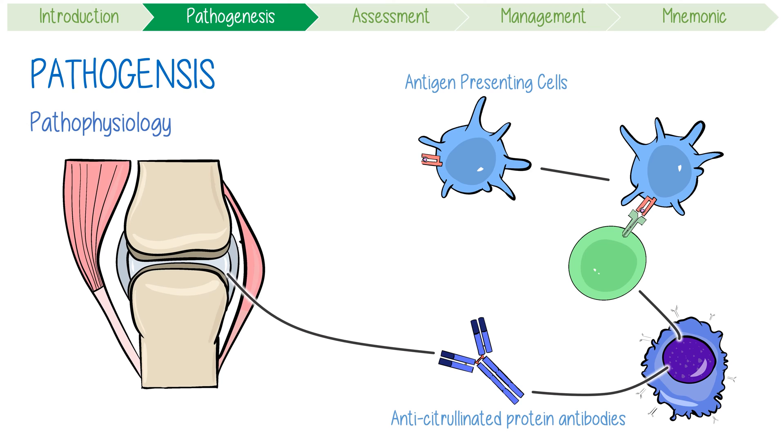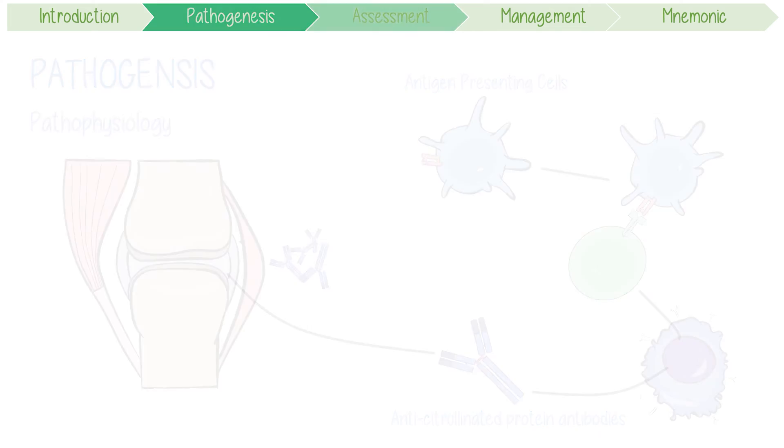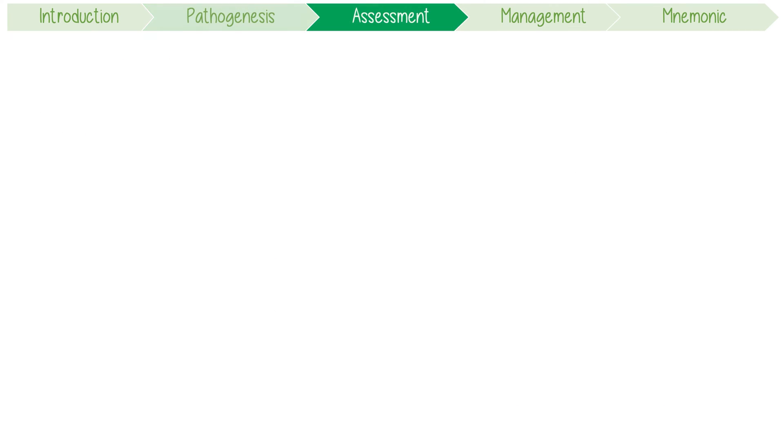which ultimately perpetuate an immune response including the production of anti-citrullinated protein antibodies. In the synovium of joints, these can stick together to form immune complexes, which induces local inflammation.